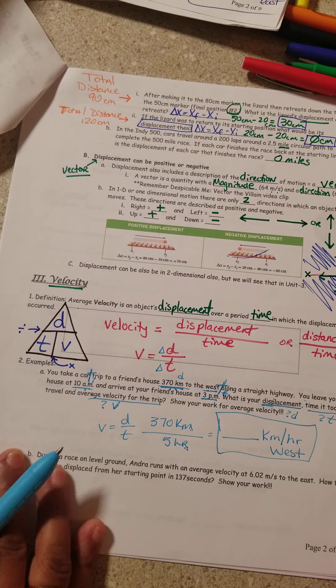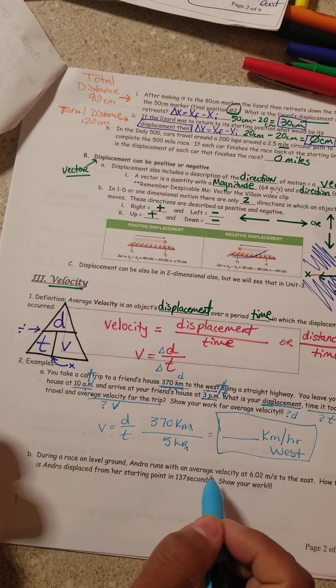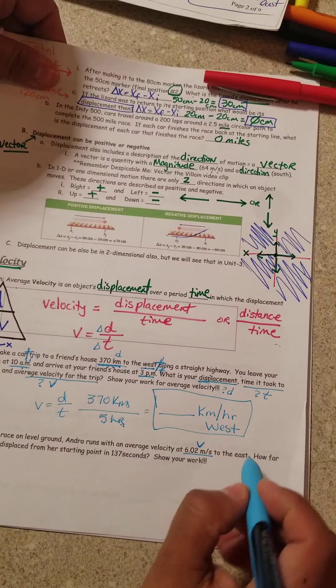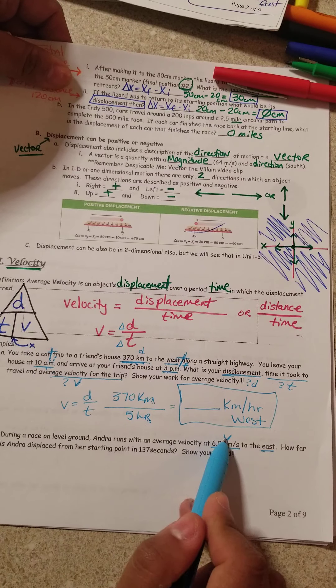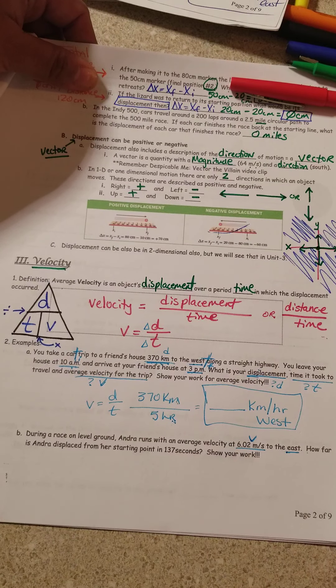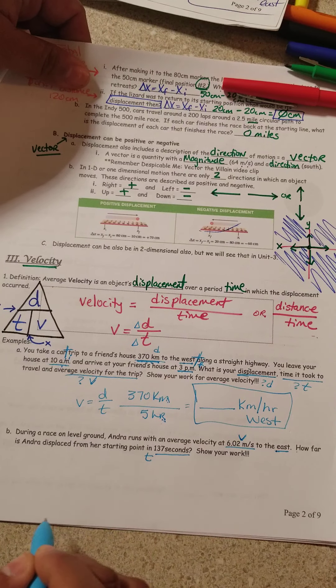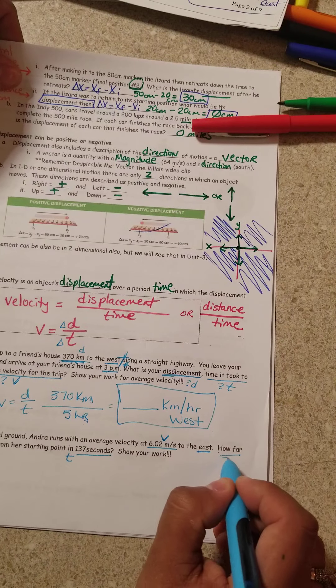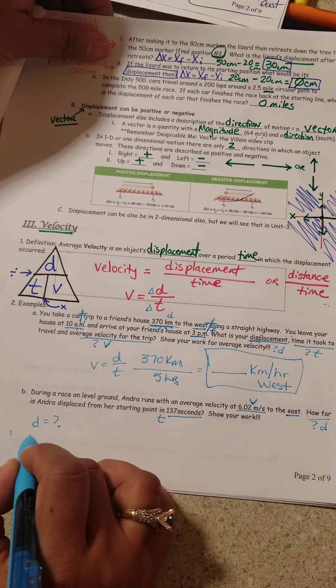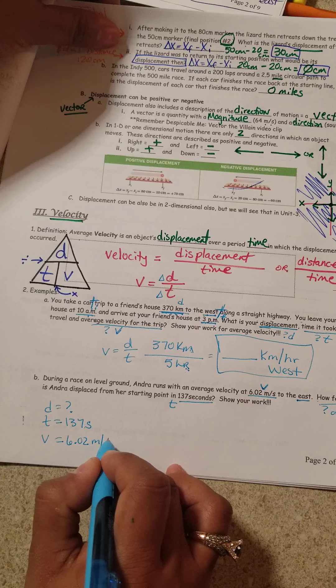Let's keep going. Next part. It says here, during a race on level ground, Andrea runs with an average velocity of lowercase v, that's the velocity number, to the east, the direction. It's a vector. They gave us a direction. How far is Andrea displaced from her starting point in 137 seconds? T. How far? Question mark. Distance. So I'm looking for the distance. They gave me the T of 137 seconds. And they gave me the velocity of 6.02 meters per second.